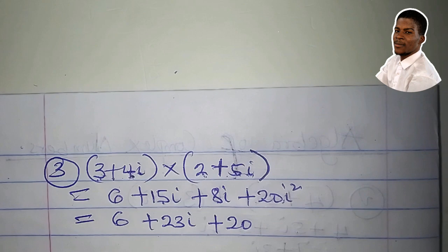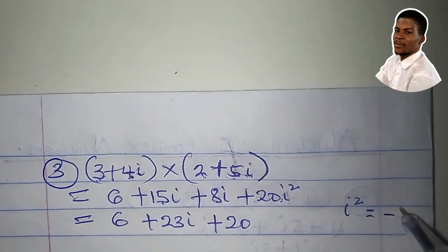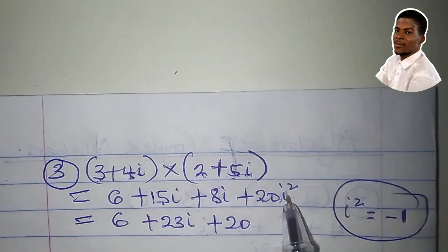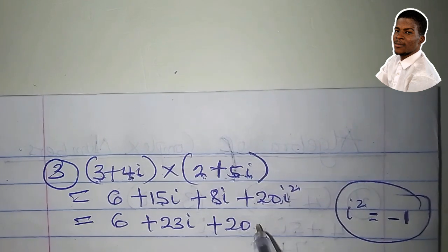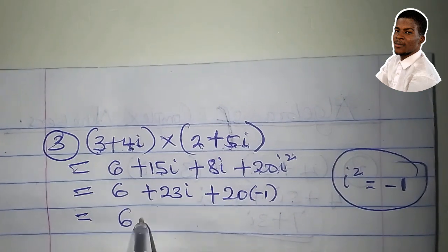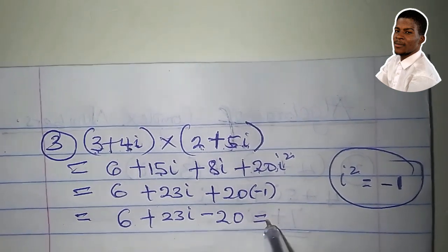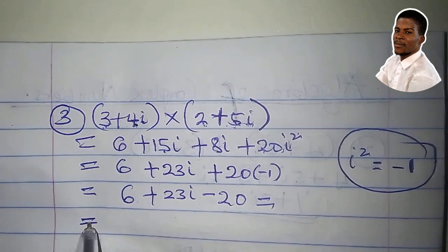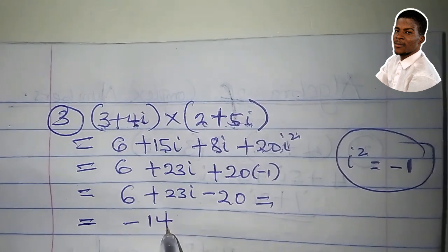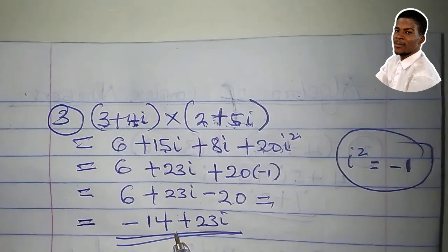Now, remember we said that i squared is equal to minus 1. So 20i squared will now be 20 times negative 1, which gives us negative 20. So 6 plus 23i minus 20. 6 minus 20 is minus 14 plus 23i. So this gives the product.